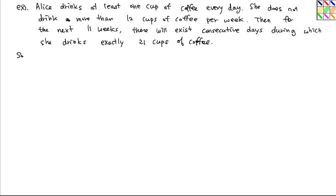So let's prove this using the pigeonhole principle. In order to solve this problem, let ai be the number of cups of coffee she drinks from day 1 to day i. Then because we are assuming that she drinks at least one cup of coffee, these will be all distinct.